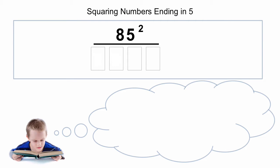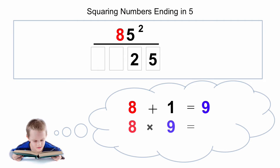Let's have a look at a second example. Here we have 85 squared. So we know the answer ends in 25. The tens digit is 8, so we add one to that: 8 plus 1 is 9. 8 times 9 is 72, and there's our answer: 7,225.